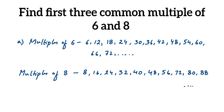Now we're going to find the common multiples — the multiples present in both lists. If you look here, twenty-four is present in both the multiples of six and the multiples of eight, so twenty-four is the first common multiple.